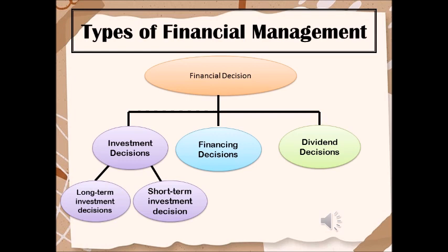Dividend decisions involve decisions regarding how the company would distribute its profits or surplus. A dividend is basically a part of profit which is distributed to shareholders.